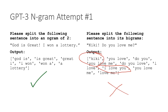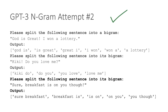On the left is my example that I gave it — 'God is great, I won a lottery' — and below it under output you can see the bigram version of that sentence. On the right, I gave it the sentence 'Kiki, do you love me?' and this is its attempt at trying to generate bigrams with only a single example. Not to be harsh, this is a pretty good single example — but GPT-3 and OpenAI, this is just another level. It's technically wrong. I think I was too optimistic.